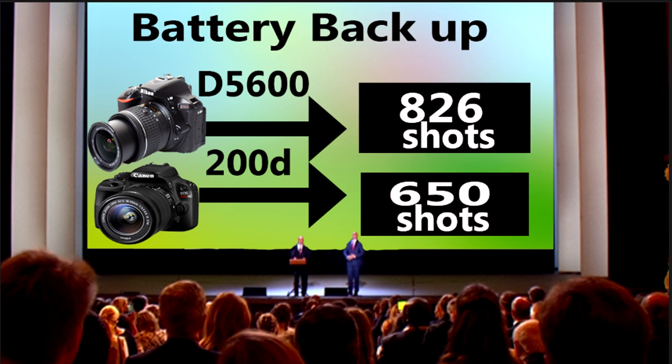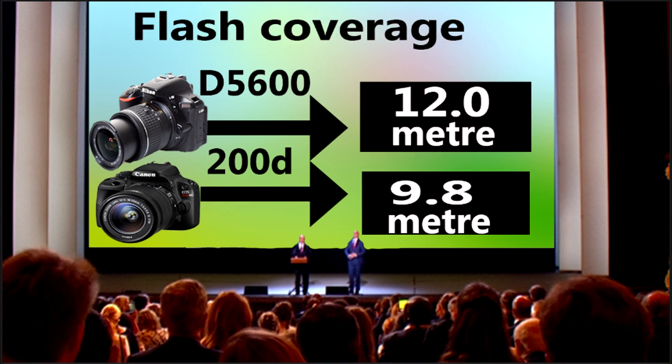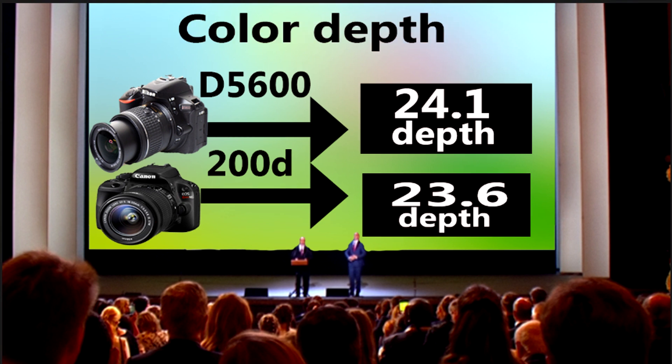The third advantage is battery life — Nikon gives you 826 shots of battery backup and Canon gives you 650 shots. The fourth difference is flash coverage: Nikon provides 12 meters and Canon provides 9.8 meters.